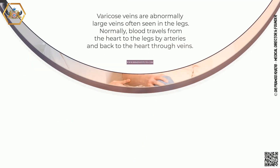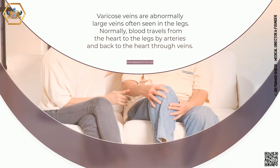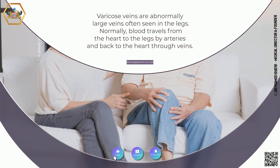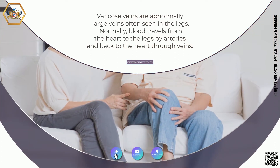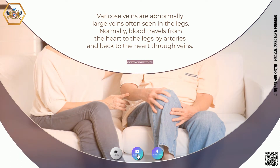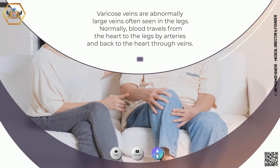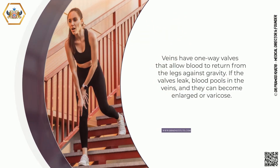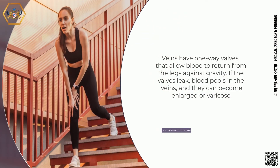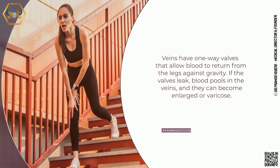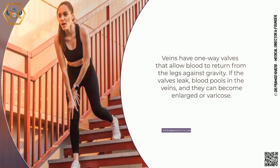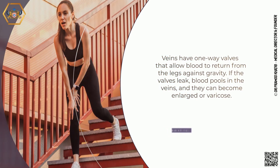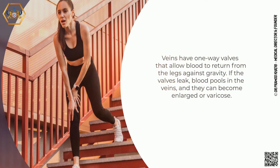Varicose veins are abnormally large veins, often seen in the legs. Normally, blood travels from the heart to the legs by arteries, and back to the heart through veins. Veins have one-way valves that allow blood to return from the legs against gravity. If the valves leak, blood pools in the veins, and they can become enlarged or varicose.